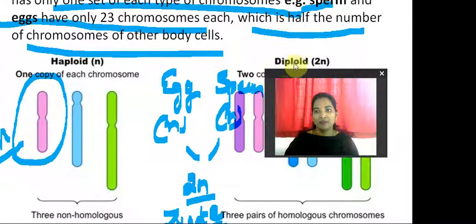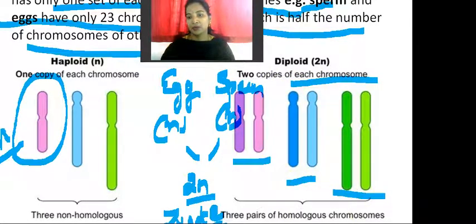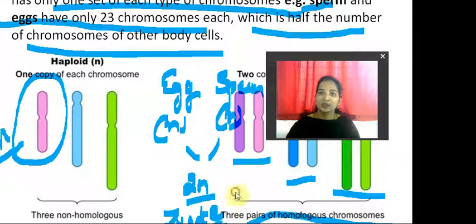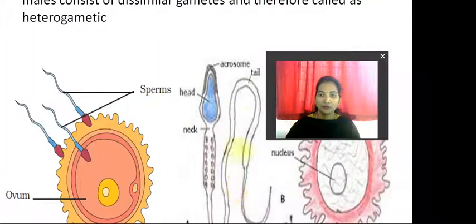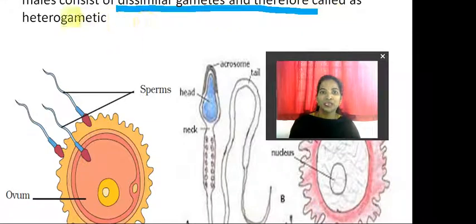Have a look at haploid and diploid. The diploid has two copies of each chromosome — same color, same with slight variation. Three pairs of homologous chromosomes of maternal and also paternal origin can be seen here. The gamete is a haploid cell.